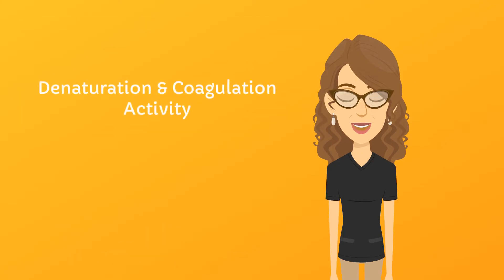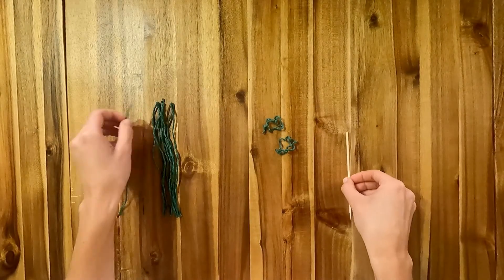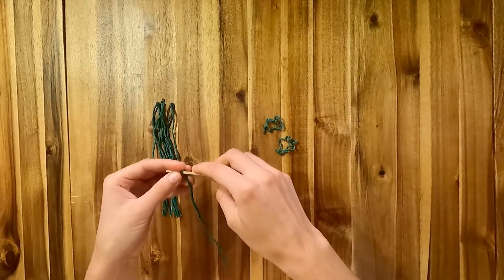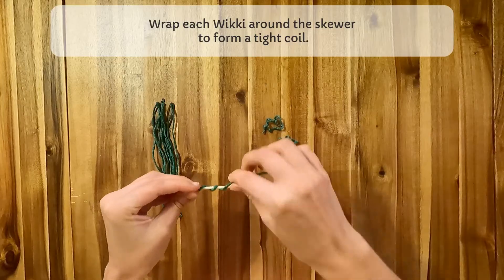Now gather the materials for our denaturation and coagulation activity and let's take a few minutes to model this transformation. You'll need 12 wiki sticks and a wooden skewer or some other thin rod such as a crochet needle. Wrap each wiki stick around the skewer to form a tight coil.